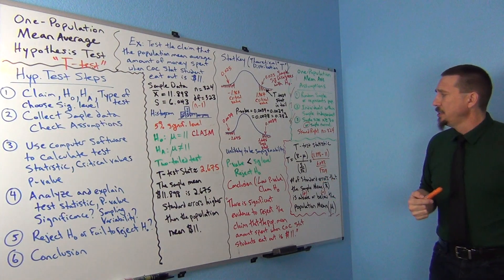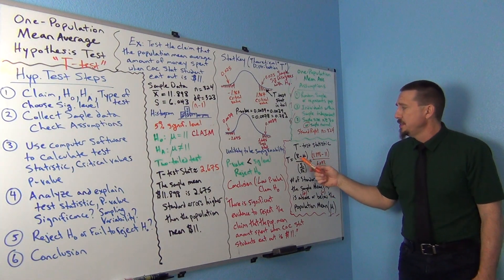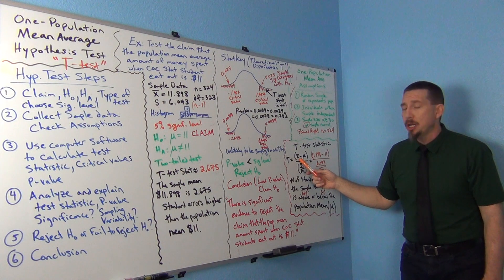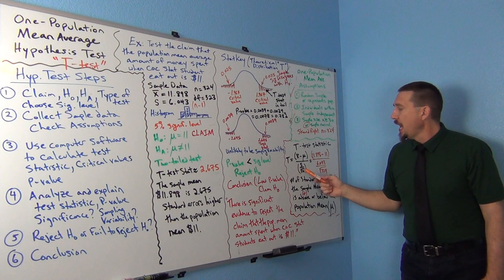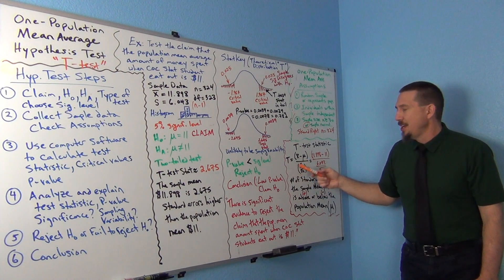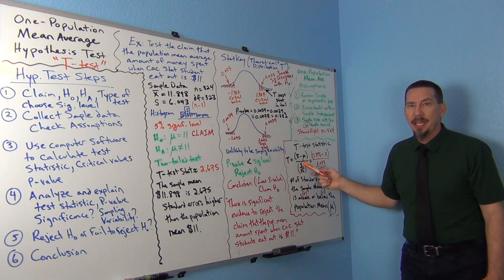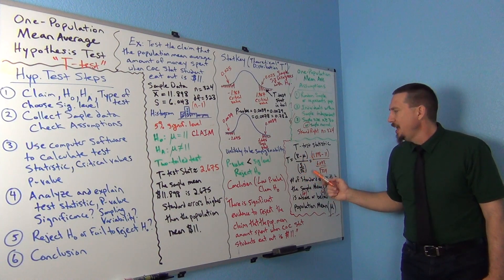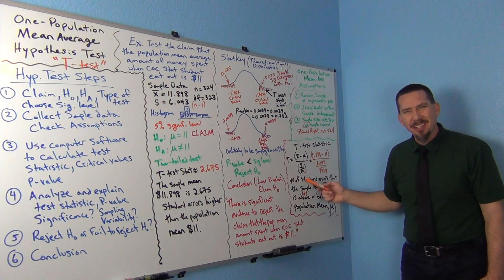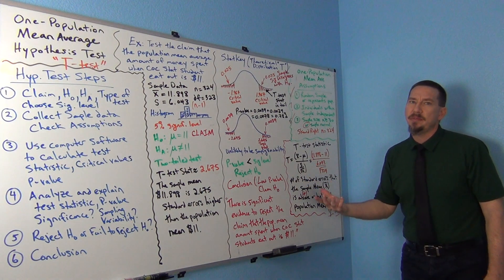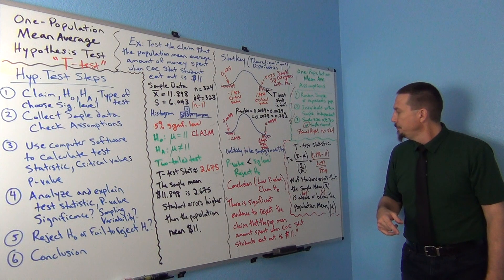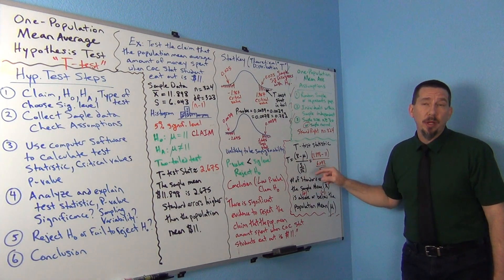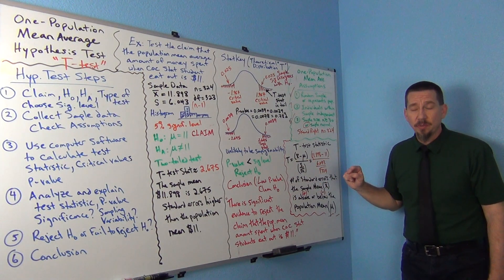That's where we want to make this calculation. The formula on the board is the sample mean x-bar minus mu — that's the population mean — and then we divide by the standard error. The standard error is s, the standard deviation, divided by the square root of n. Remember, this was a standard error estimation formula — it's trying to estimate what we think the standard deviation of the sampling distribution would look like. It's the same formula we used for one-population mean confidence intervals in our last unit.